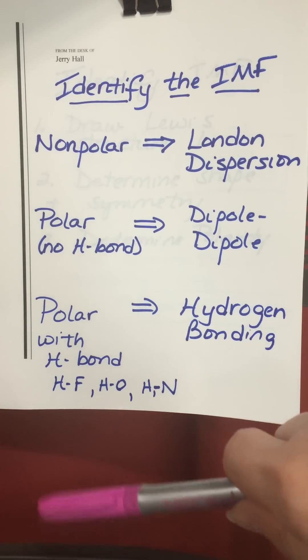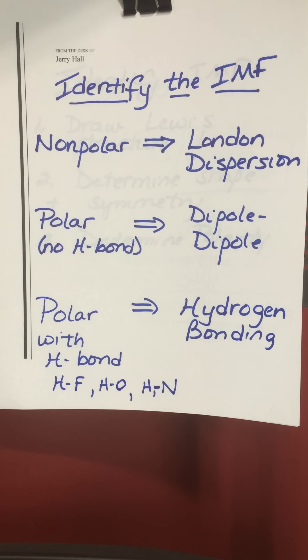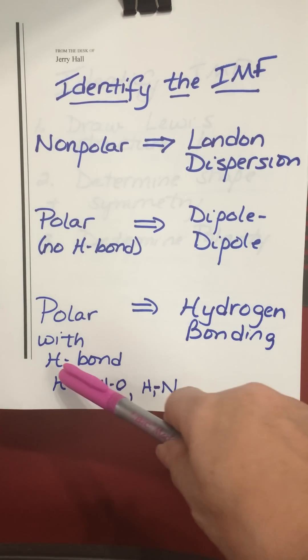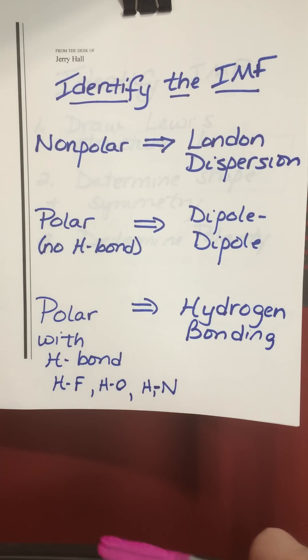If the molecule is polar and it can hydrogen bond, that is it contains hydrogens directly bonded to either fluorine, oxygen, or nitrogen, then its predominant intermolecular force is hydrogen bonding.